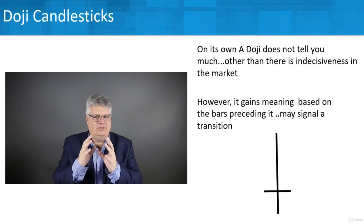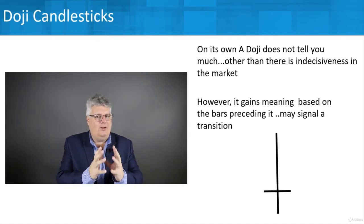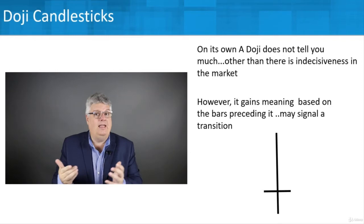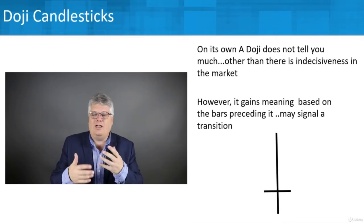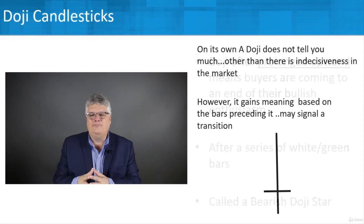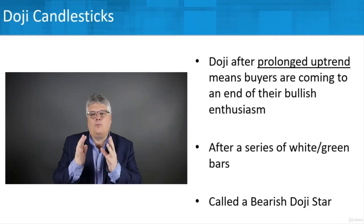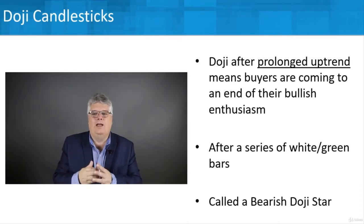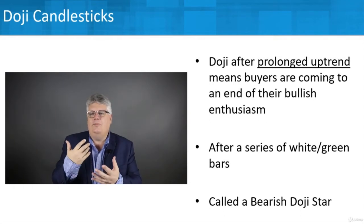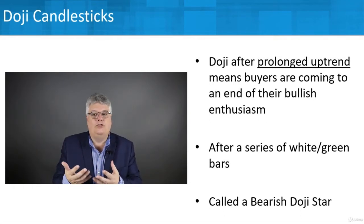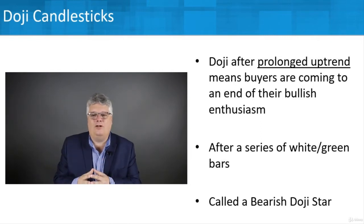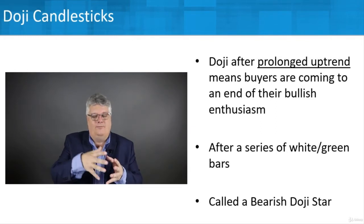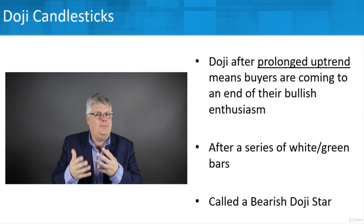Don't think 'I see a doji, I do something.' Think 'I see a doji, I need to look backwards a little bit to see what might be happening next' — and that will help with your trading decision: do I buy, do I sell? A doji after a prolonged uptrend — where buyers have been pushing prices up, seen as a series of white or green candles — could mean the bullish enthusiasm is coming to an end. That might be the end of that trend.